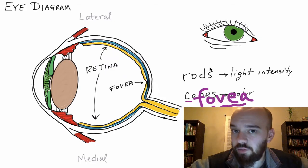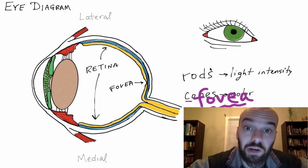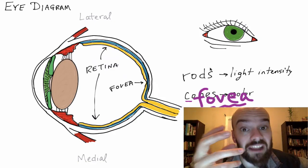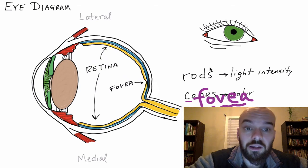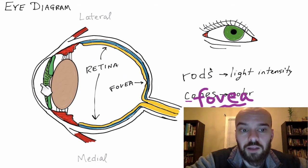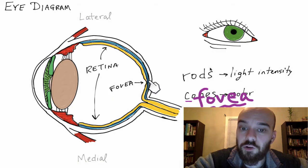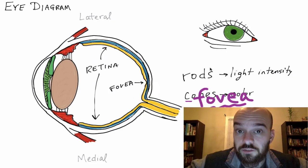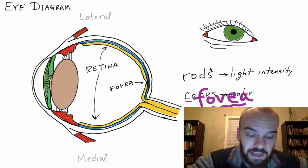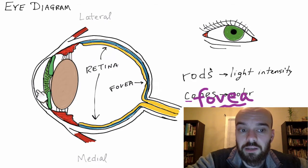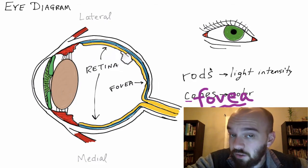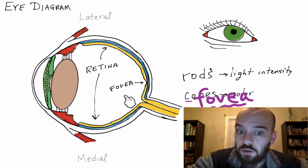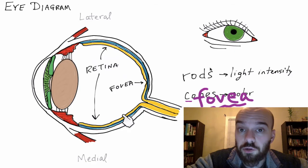Whenever you look directly at something — if you're looking directly at this video right now — the light from the video is entering through the cornea, passing through the pupil, through the lens, and it's focused right onto the fovea. Any light from your peripheral vision, if you see something out of the corner of your eye, that light's going to come in and focus somewhere else on the retina, depending on where that object is compared to where you're looking.